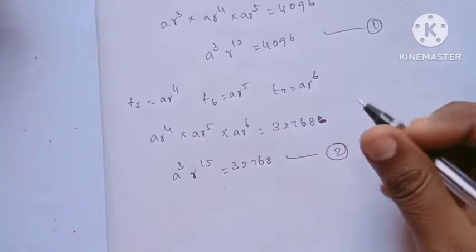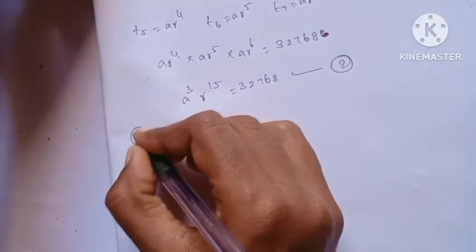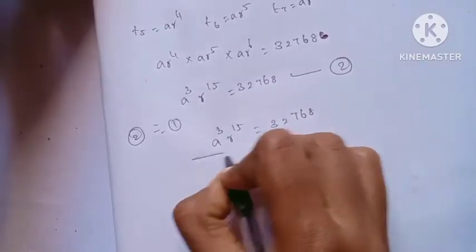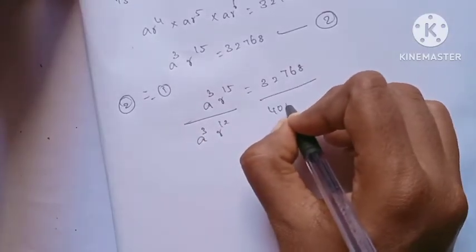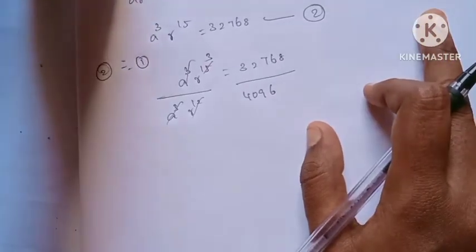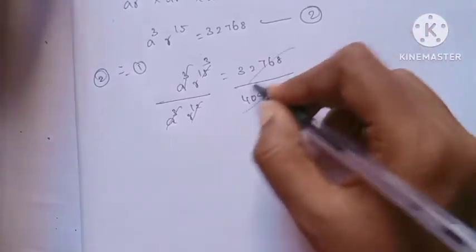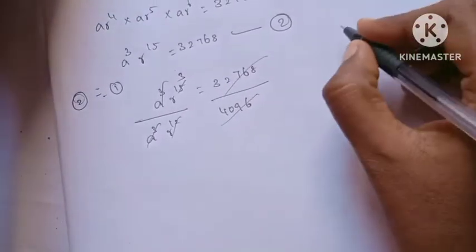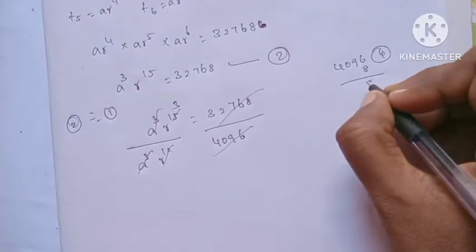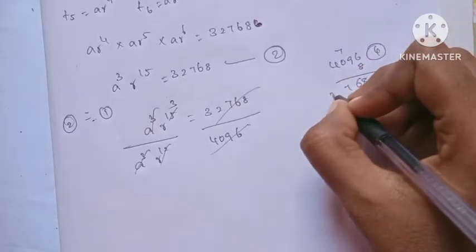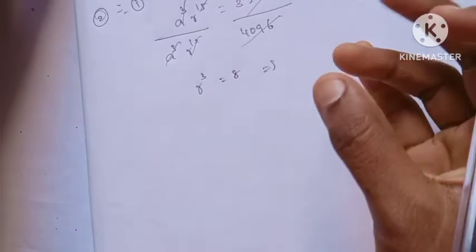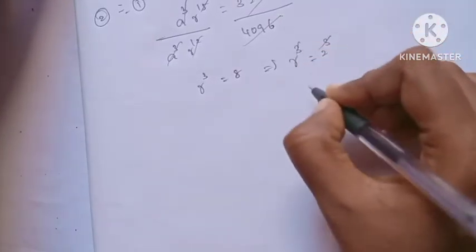We divide equation 2 by equation 1. A cube of power 15 divided by A cube of power 12 equals 32,768 divided by 4,096. After cancellation, R power 3 equals 8. Since 2 cubed equals 8, R cube equals 2 cube, therefore R is equal to 2.